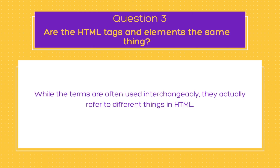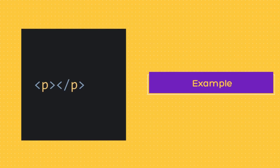The next question is: are HTML tags and elements the same thing? This question often confuses many web developers. While the terms are often used interchangeably, they actually refer to different things in HTML. HTML tags are the markup symbols used to define the structure and content of a web page, placed within angle brackets, and they often come in pairs — an opening tag and a closing tag.